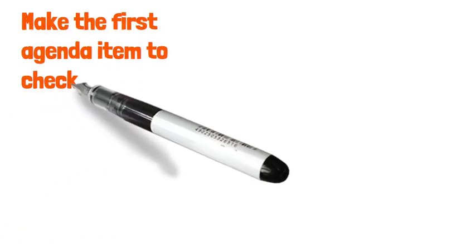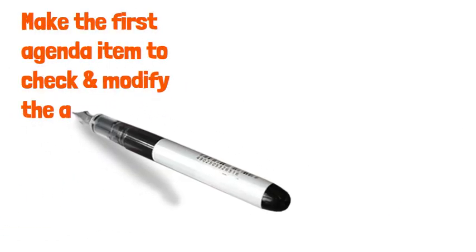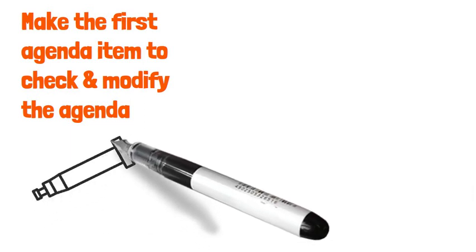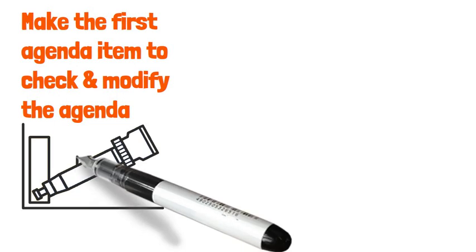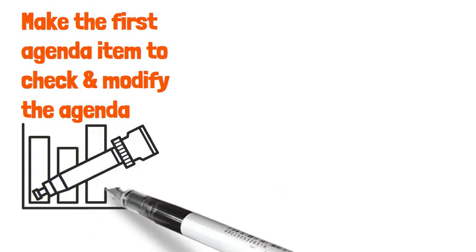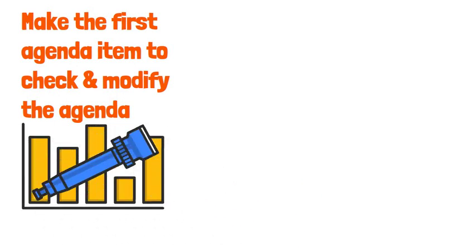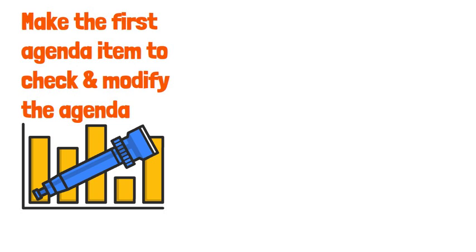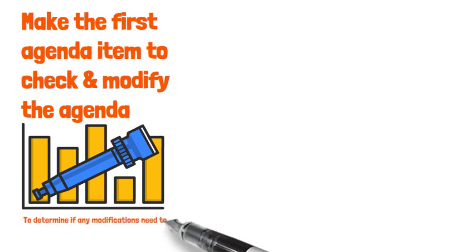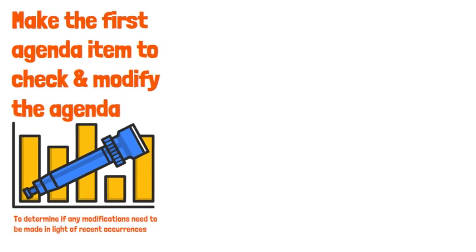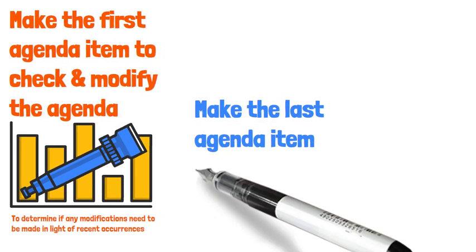Tenth, make the first agenda item a check and modification of the agenda itself. Even though you and your colleagues have already decided on the agenda ahead of time, take a moment to determine if any modifications need to be made in light of recent occurrences. By checking at the beginning of the meeting, you will increase the chance that the team will use its meeting time most effectively in light of any relevant developments.